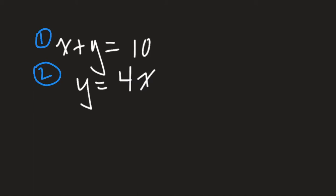In this example, you can see that y is already by itself — it's ready to be substituted in. Always look for the equation that has one of the terms, x or y, already isolated and by itself. This is going to make it easy to insert into the other equation.